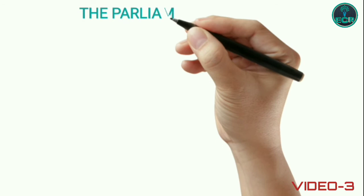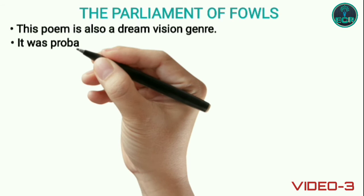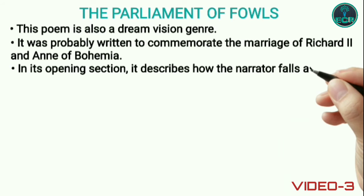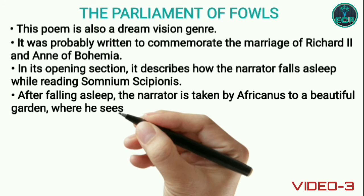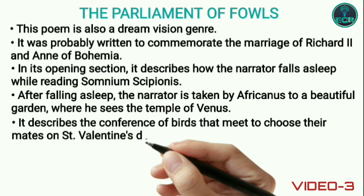Next is The Parliament of Fowls. This poem is also a dream vision genre. It was probably written to commemorate the marriage of Richard II and Anne of Bohemia. In its opening section, it describes how the narrator falls asleep while reading Somnium Scipionis. After falling asleep, the narrator is taken by Africanus to a beautiful garden where he sees the Temple of Venus. It describes the conference of birds that meet to choose their mates on St. Valentine's Day. It is a type of satire on the tradition of courtly love.